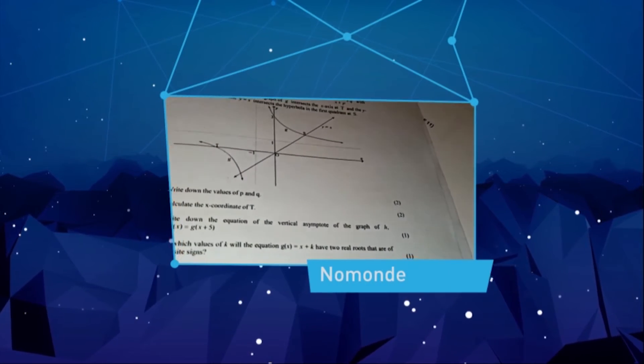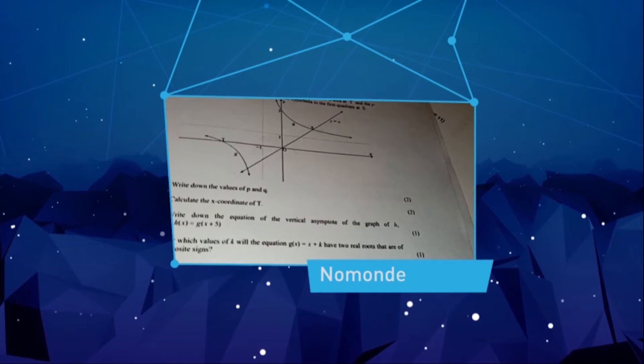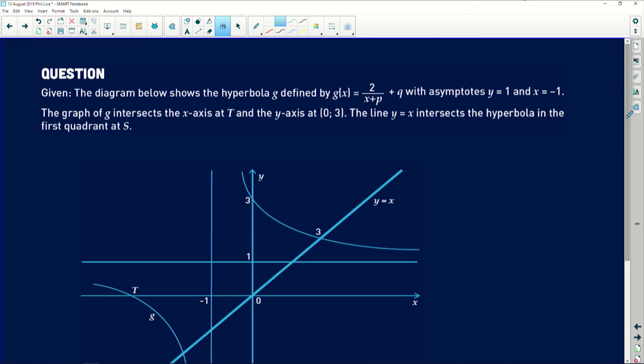Please help me with this question. It says given the diagram below shows the hyperbola g defined by g of x equals 2 divided by x plus p plus q, which is pretty much the generic form of a hyperbola. We've just been given the constant a.